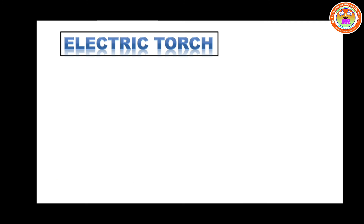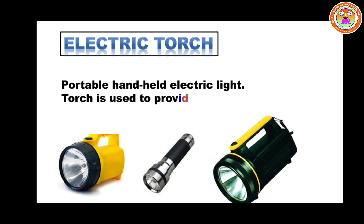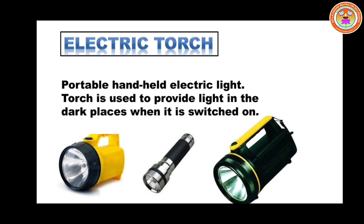Then electric torch — a portable handheld electric light. Torch is used to provide light in a dark place when it is switched on. Suppose the power is failed, we can use the portable torch to provide light in a dark place.